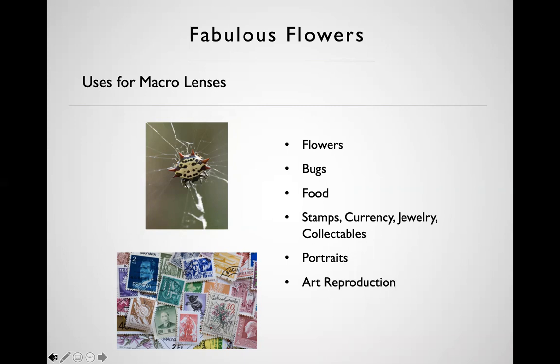Portraits is one that a lot of people don't think about, but most macro lenses are normal to slightly long telephoto. They're very sharp, generally f2.8 aperture lenses — really great for portraits. So you can use your 70, 90, or 105mm macro lens for people too. Modern macro lenses today are sharp throughout their entire range. Art reproduction is another use — macro lenses are slightly long so they don't have the distortion of wide-angle lenses.